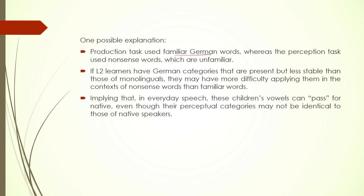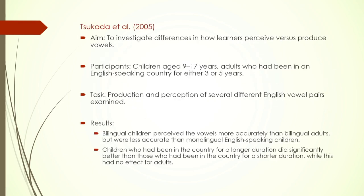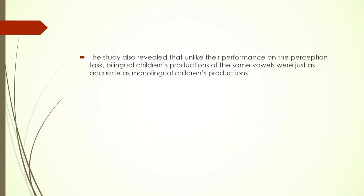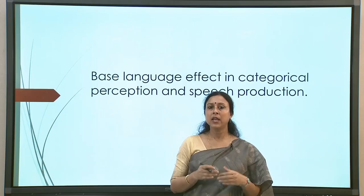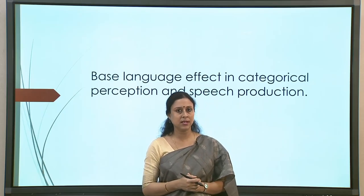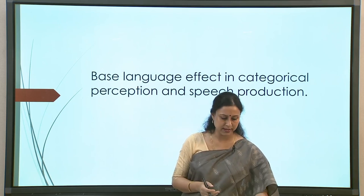Production of the contrasts was found to be easier as opposed to perceiving those vowel contrasts. This has been found by many other studies and many possible explanations have been put forward. One possibility is that the production task used familiar German words, whereas the perception task was based on non-words. Another study also revealed that unlike performance in perception, production of the same vowels was as good as monolinguals — many studies have found similar performance, where even if perception tasks did not show good results, production tasks on the same vowels showed better results.